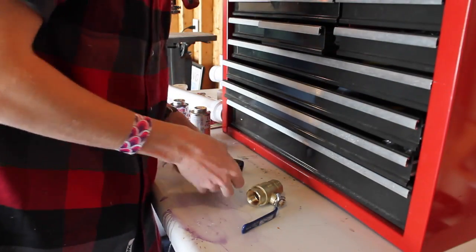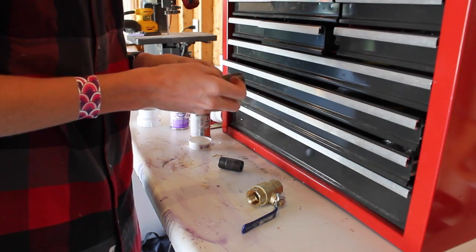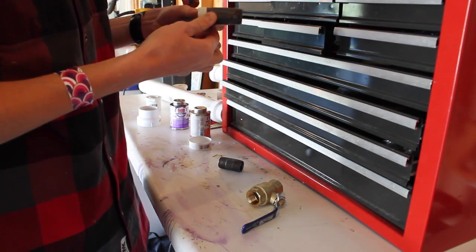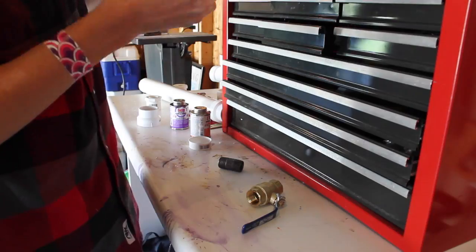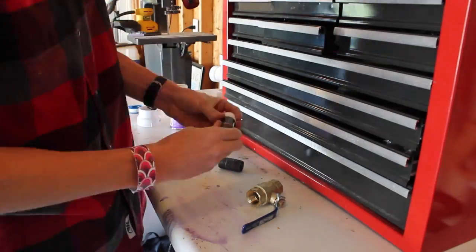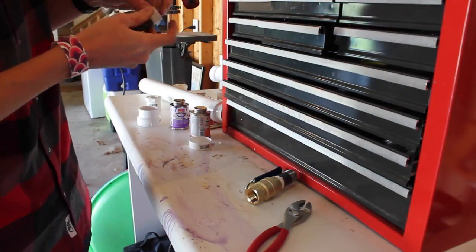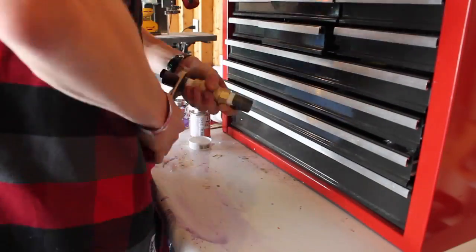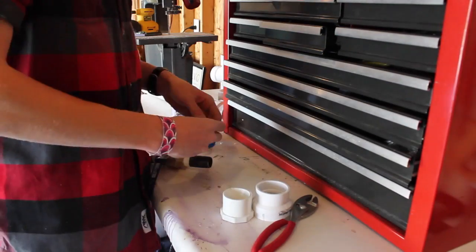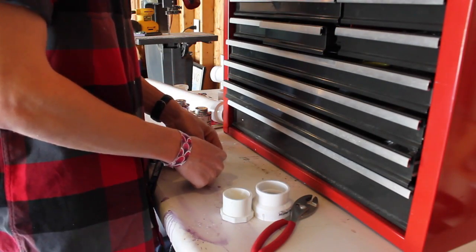Next, take the Teflon tape and wrap it around the threaded sections of the iron 3 quarter inch diameter nipple. This prevents the threads from easily coming undone once they're inside the 3 quarter inch ball valve. You may find it easier to tighten the threads as tight as possible if you use a wrench.